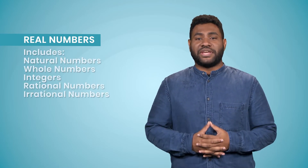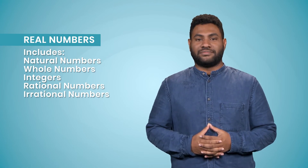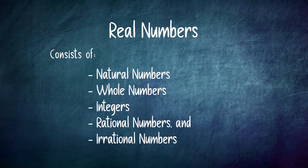The last and final group is the real numbers group. All the groups that we have learned so far put together constitute this group — that is, natural numbers, whole numbers, integers, rational, and irrational number groups together form the real number system. This is the number system, and is the most fundamental concept to start off with basic numeracy.